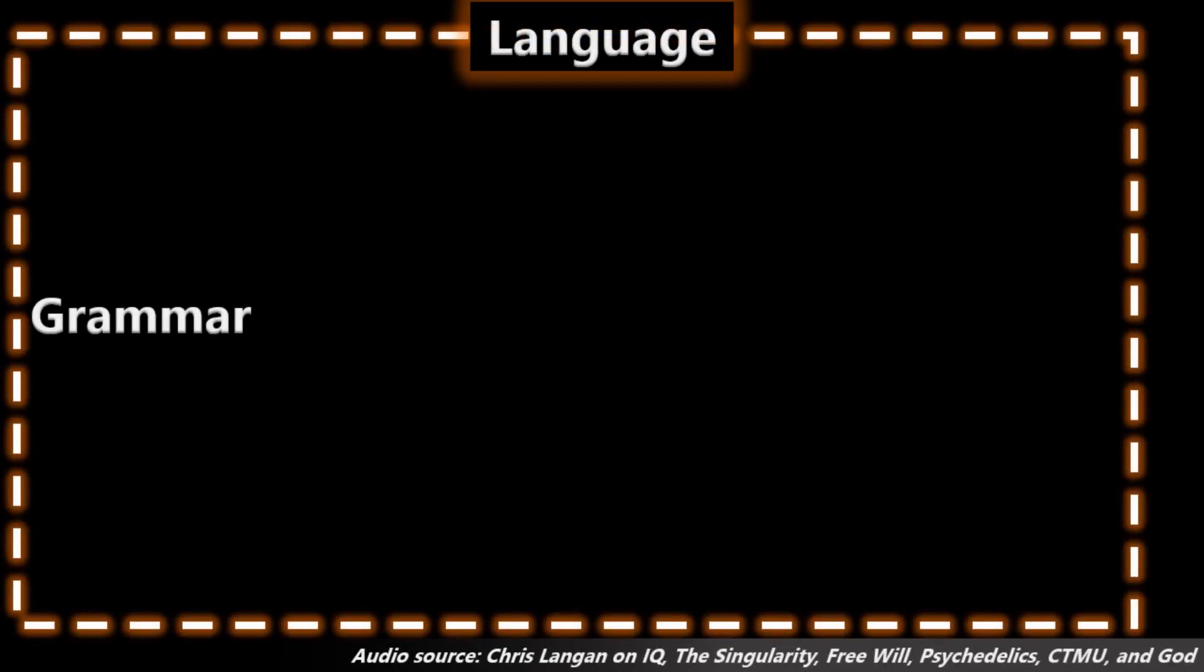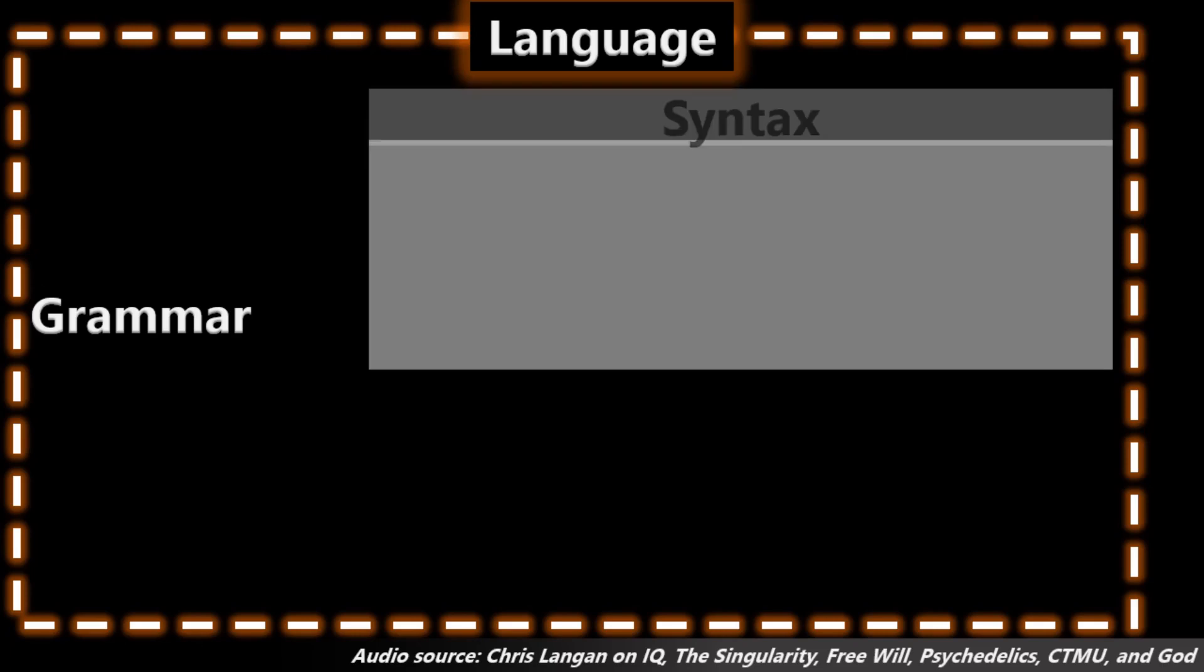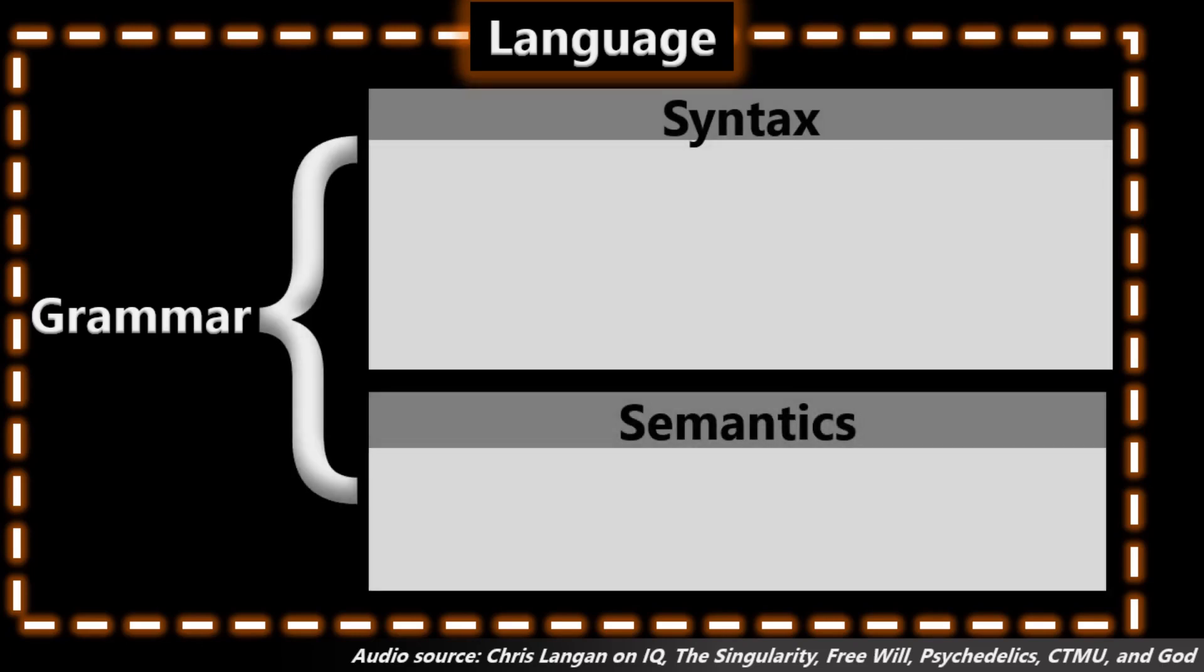Language is, as I say, the most general algebraic structure there is. To see that, any other algebraic structure you can name is a language. When you talk about syntax and semantics, you are talking about a language.